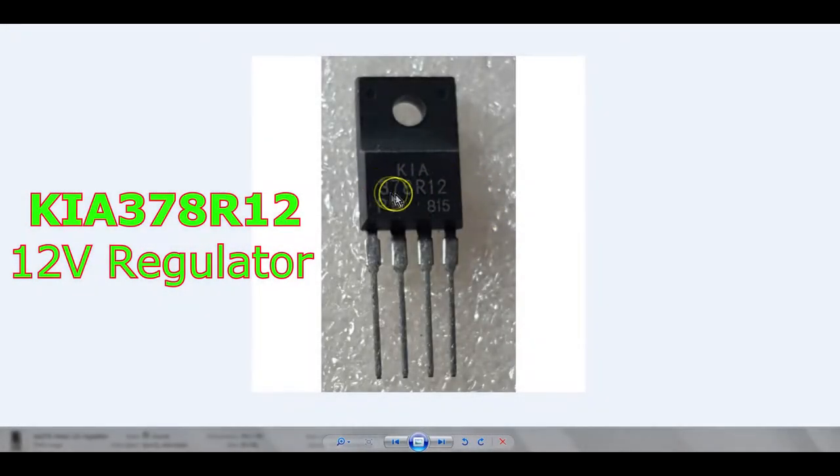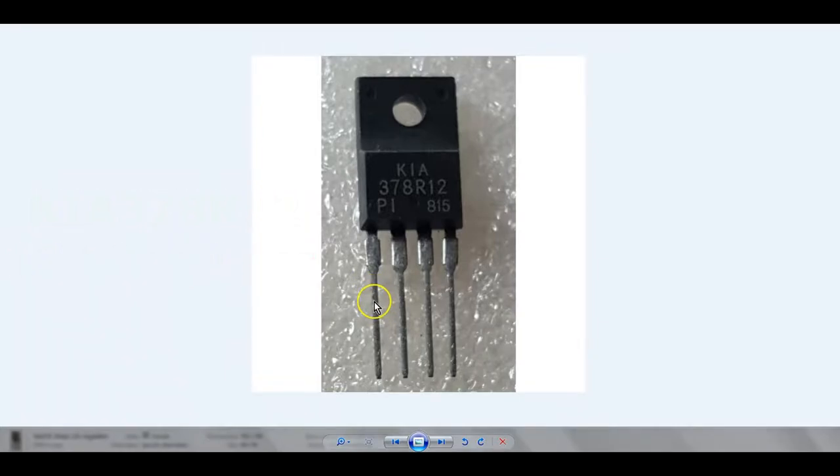Okay, so this is a picture of the actual regulator. This is a KIA 378. I'm going to go over the pins. The 12 means it's a 12 volt regulator. Pin one is the input. Pin two, which is there, that is the output, which should be 12 volts. And pin three is ground, and pin four is the voltage to switch the regulator on or off. This should be about 2.7 volts there.